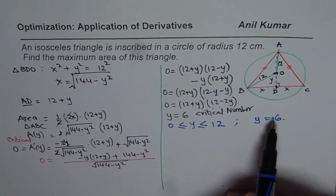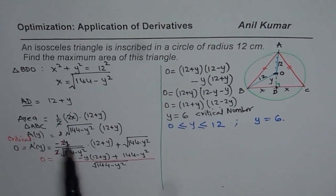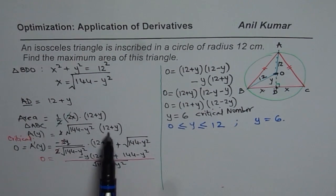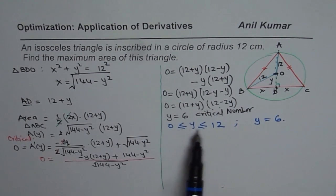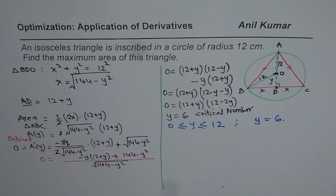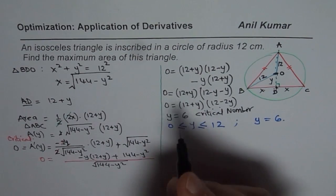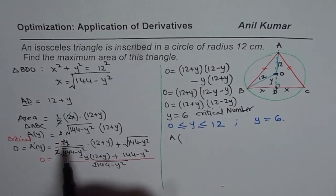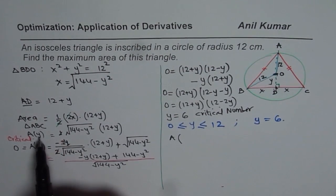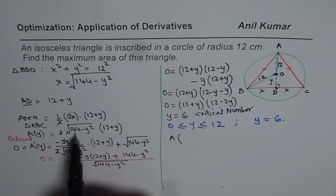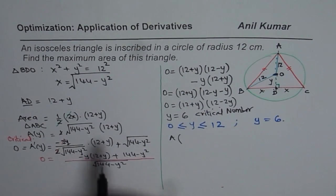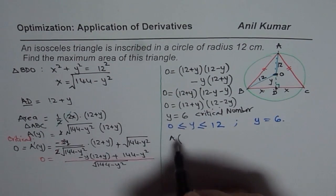We need to test the value of the area at these three values: Y = 0, Y = 12, and Y = 6. The area formula in terms of Y is: area equals square root of (144 minus Y²) times (12 plus Y). So let us find area for Y = 0.